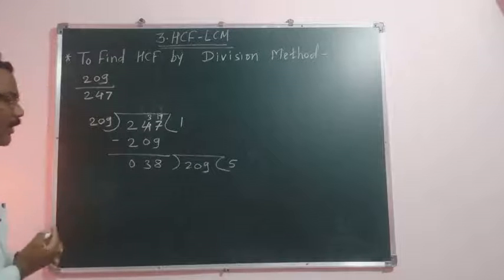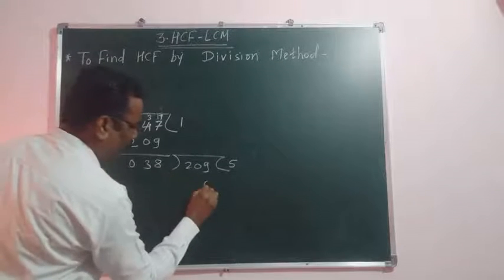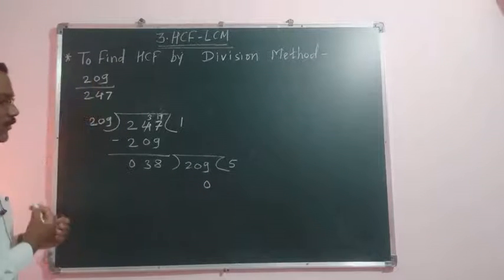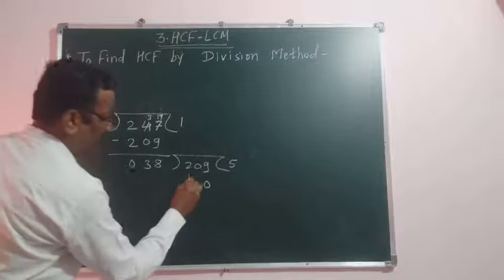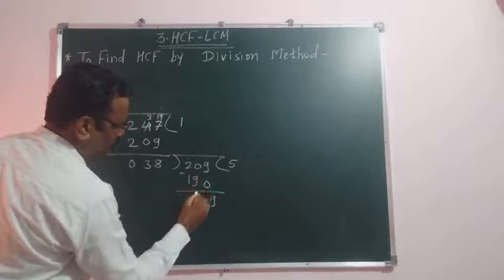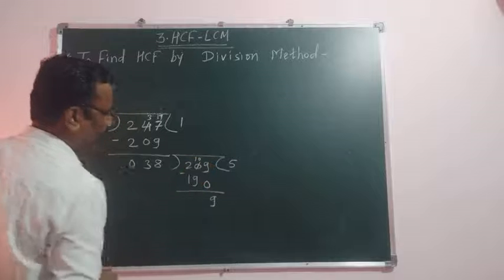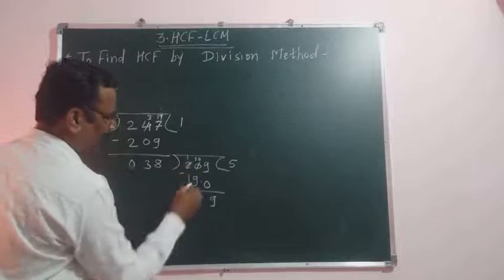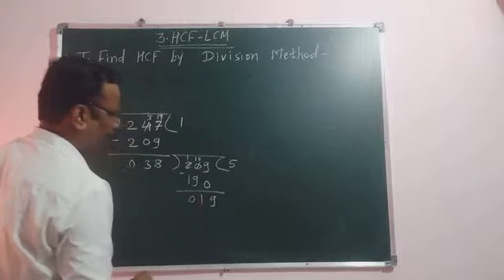Now divide here 209 by 38. We can divide with 5. So 5 eights are 40. 5 twos are 10 plus 4 is 14. We get 190. Borrow 1 from here. So we get here 19.